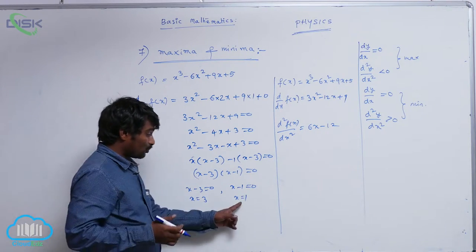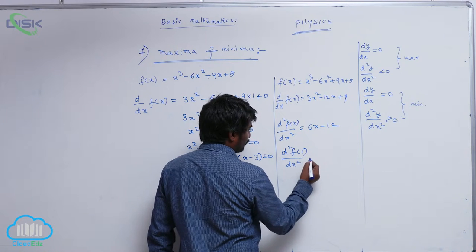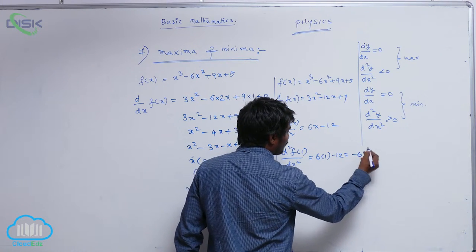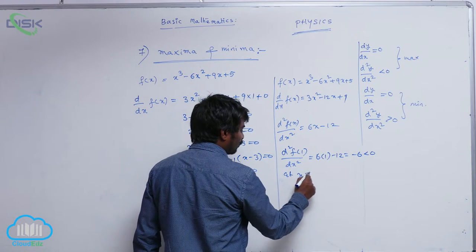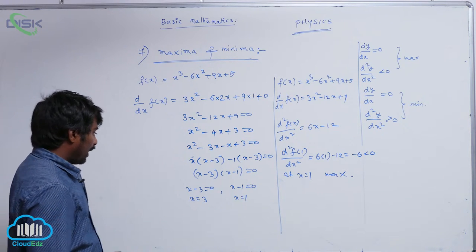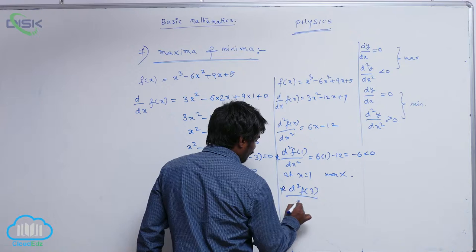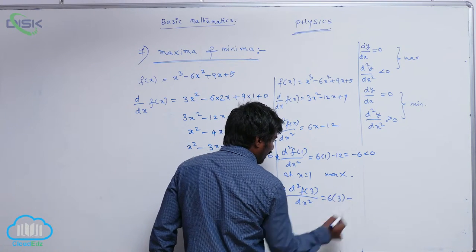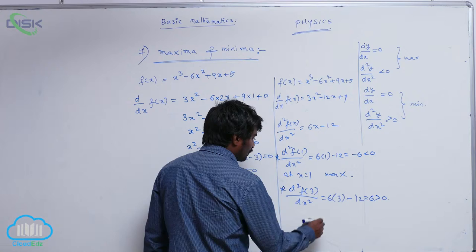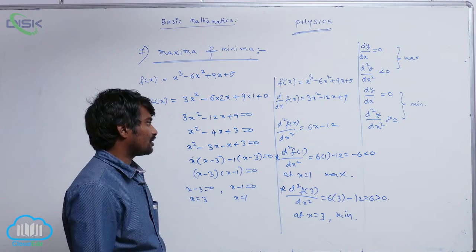Now, substitute x equal to 1: d square f of 1 by dx square is equal to 6 into 1 minus 12, giving minus 6. This is less than 0, so at x equal to 1 it attains maximum value. At x equal to 3: d square f of 3 by dx square is equal to 6 into 3 minus 12, that is 18 minus 12, equal to 6. This is greater than 0, so at x equal to 3 we get the minimum value because the double differentiation is positive.